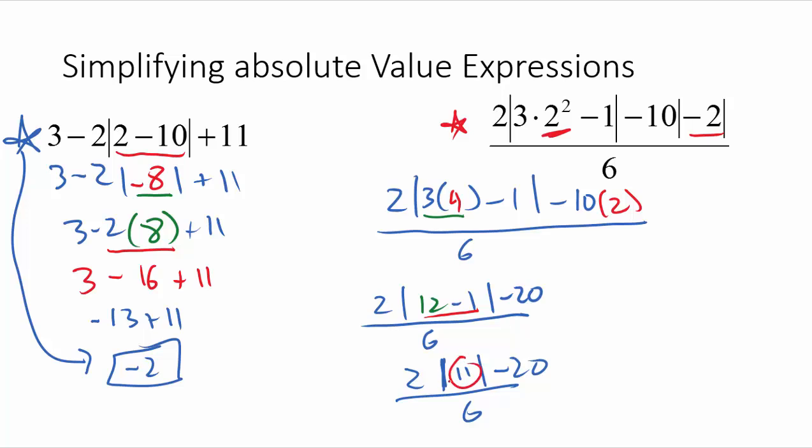Now that this is down to one single number, I can take the absolute value of it. And you might guess the absolute value of a positive number just stays the same. So really, this is just going to become 2, and I drop the absolute value bars and just make it 11. Bring everything else down, minus 20, all divided by 6.